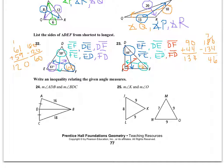For problems 24 and 25, we write an inequality relating the given angle measures. In problem 24, I check whether I have two congruent sides. In the picture I can see one set of congruent sides and a reflexive side in the middle — congruent to itself. So I have two congruent sides between the two triangles. Comparing the third sides, I see 16 and 18. Since 16 is the smaller side, angle ADB must be less than angle BDC.